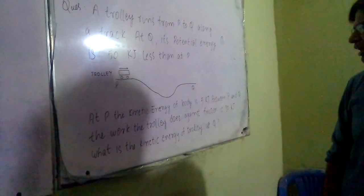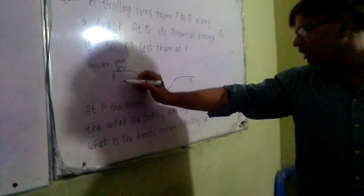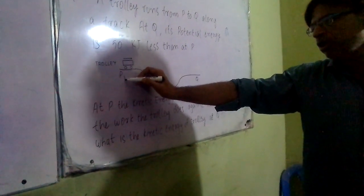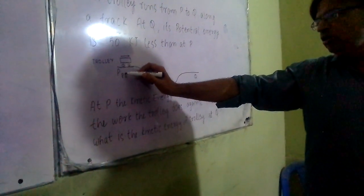At P, the kinetic energy of the body is 5 kJ. The potential energy is 5 kJ.